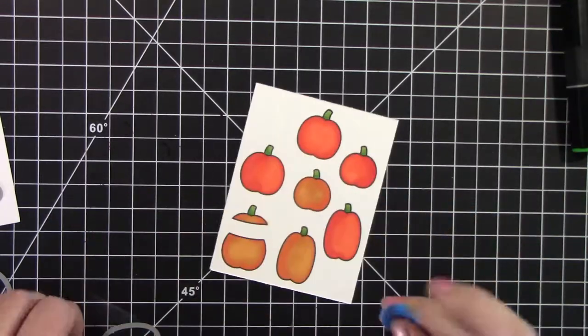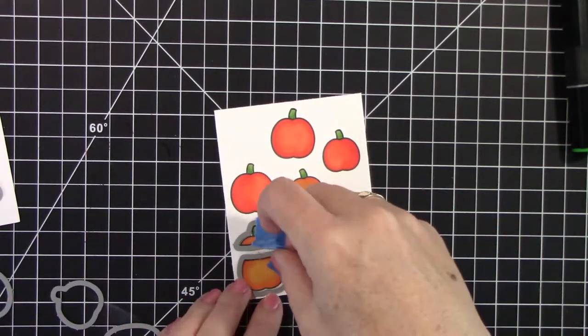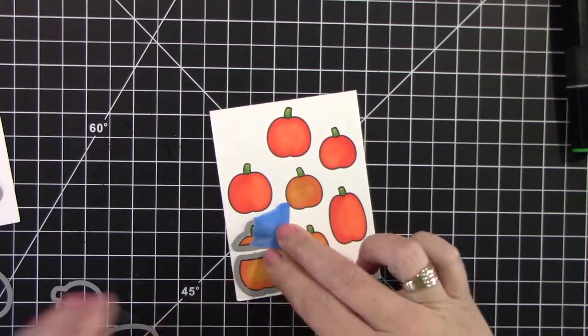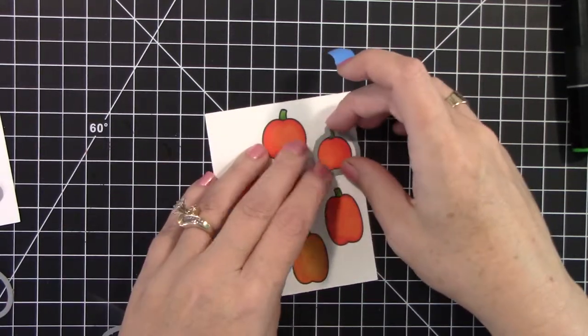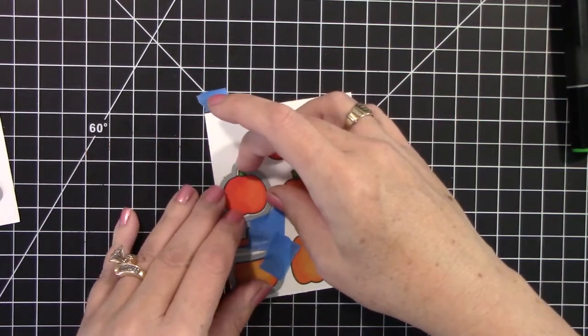And then I'm going to cut those out with the die cuts. And of course, if you don't have those, you can just cut them out by hand with scissors. And I'm just trying to cut out as many as possible.